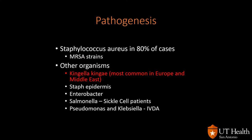In terms of pathogenesis, it's important to know that Staphylococcus aureus is the most common pathogen causing osteomyelitis — bacterial osteomyelitis in the United States and in the world, and some strains are methicillin-resistant. Other organisms to remember for tests: Salmonella for sickle cell patients, Pseudomonas and Klebsiella in IVDA patients. In Europe and the Middle East, Kingella is very common but not as common as Staphylococcus aureus.